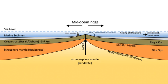Mid-ocean ridges exhibit active volcanism and seismicity. Spreading rates range from approximately 1 to 20 centimeters per year. New magma steadily emerges onto the ocean floor and intrudes into the ocean crust at and near rifts. The rocks making up the crust below the seafloor are youngest along the axis of the ridge and age with increasing distance from that axis.